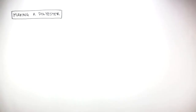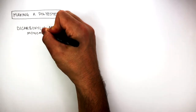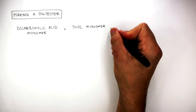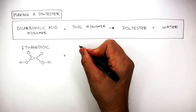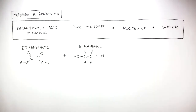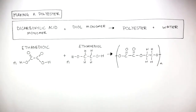Making a polyester involves reacting a dicarboxylic acid monomer with a diol monomer to form a polyester and water. For example, if ethane dioic acid reacts with ethane diol — writing N here and N here to represent how there are many of these monomers — they react to form a polyester represented by a repeating unit, and produce two molecules of water for every repeating unit of polyester formed.